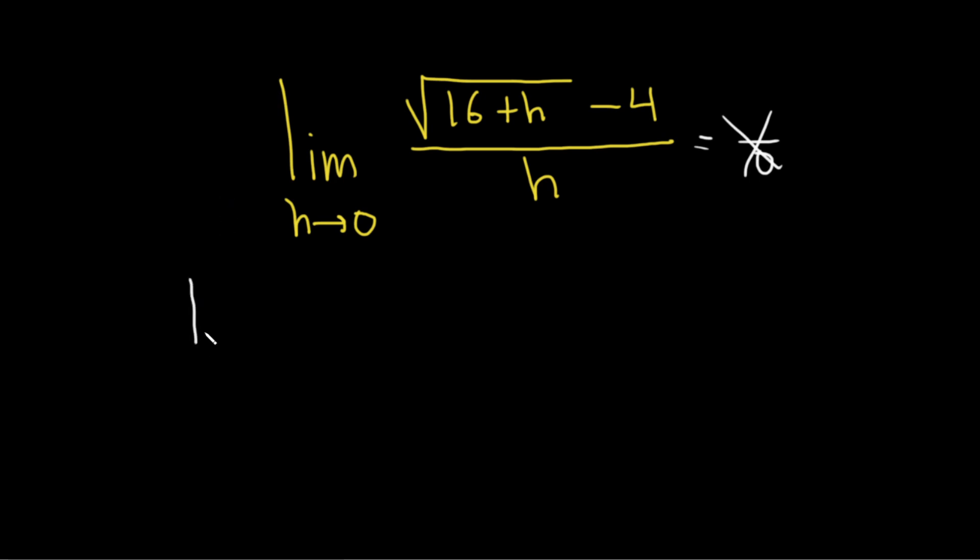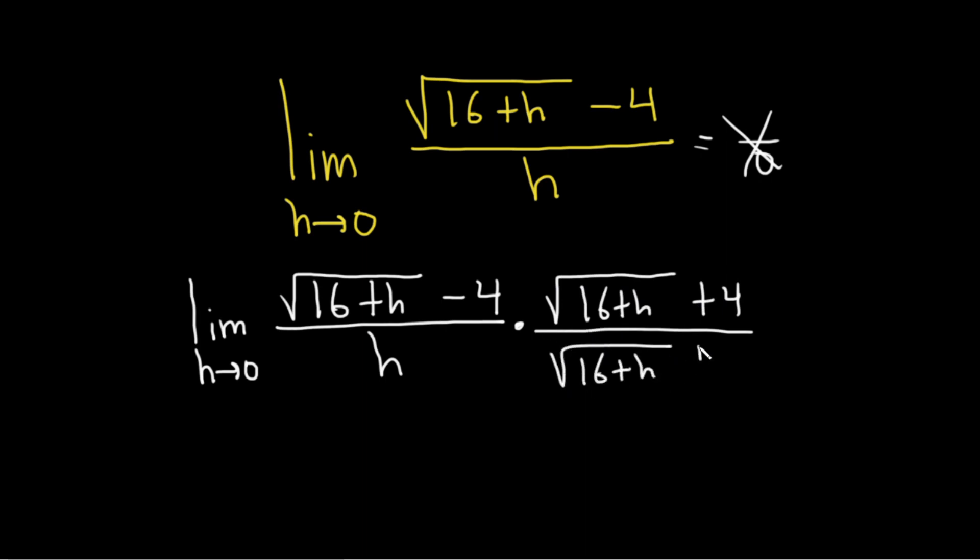And that something else is called rationalize. I'm going to show you how to do that. So this is the limit as h approaches 0. And then here we have the square root of 16 plus h and then minus 4 all over h. And so what we're going to do is we're going to multiply the numerator and the denominator by the following: square root of 16 plus h plus 4. And then same thing on the bottom, square root of 16 plus h plus 4.